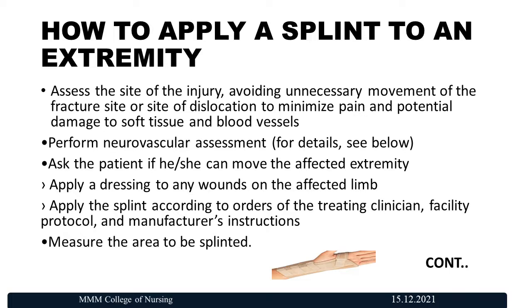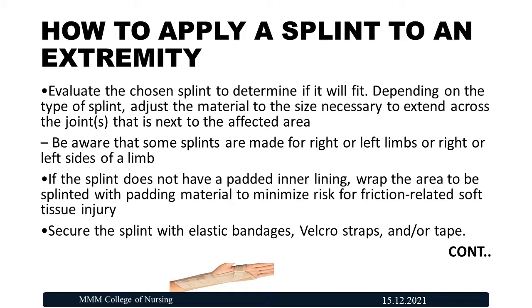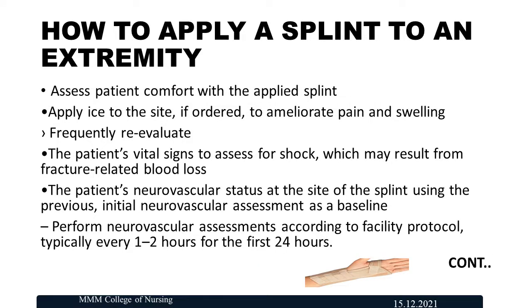Perform a neurovascular assessment if necessary — assess whether the patient can move the affected extremity. Apply dressing to any wounds on the affected limb. Apply the splint according to the orders of the treating clinician, facility protocol, and manufacturer instructions. Measure the area to be splinted and evaluate whether the chosen splint will fit. Adjust the material to the size necessary to extend across the joint next to the affected area. Note that some splints are made for the right or left limb or side. If the splint does not have a padded inner lining, wrap the area with padding material to minimize friction-related soft tissue injury. Secure the splint with elastic bandages, wool, straps, or trim.